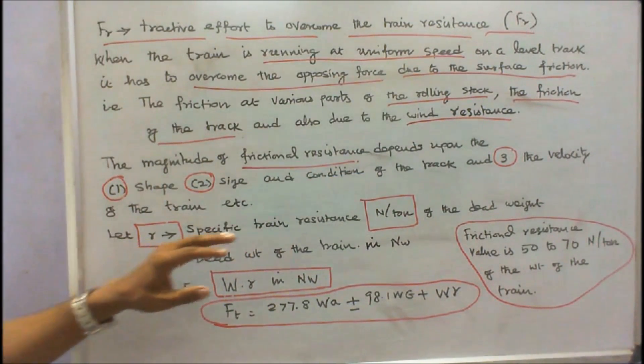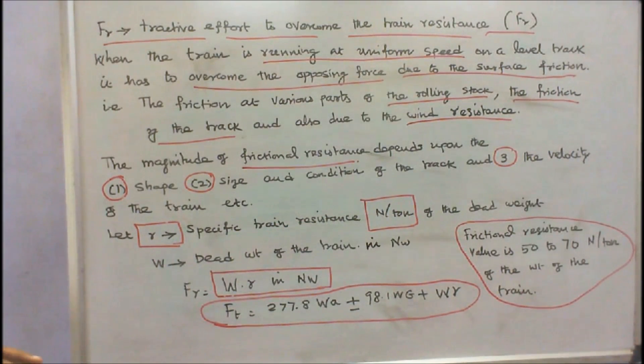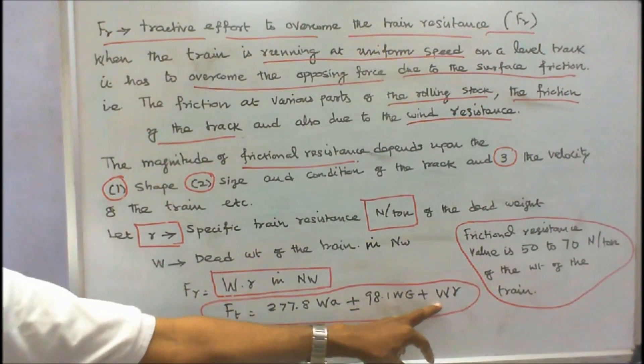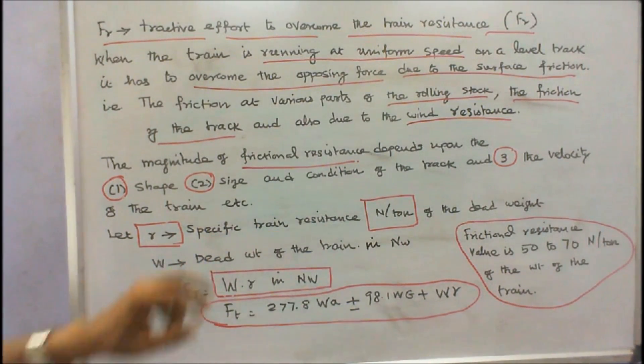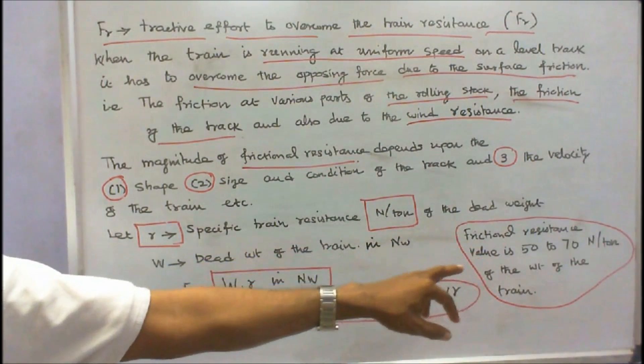R be the specific train resistance in newton per ton of the dead weight, or R is equal to specific resistance to motion, where W is equal to dead weight of the train in newton. Therefore, tractive effort to overcome the train resistance FR is equal to W into R in newton. Therefore, total tractive force FT is equal to 277.8 into W into A plus or minus 98.1 into W into G plus W into R, where R is the specific train resistance. The frictional resistance value is 50 to 70 newton per ton of the weight of the train.